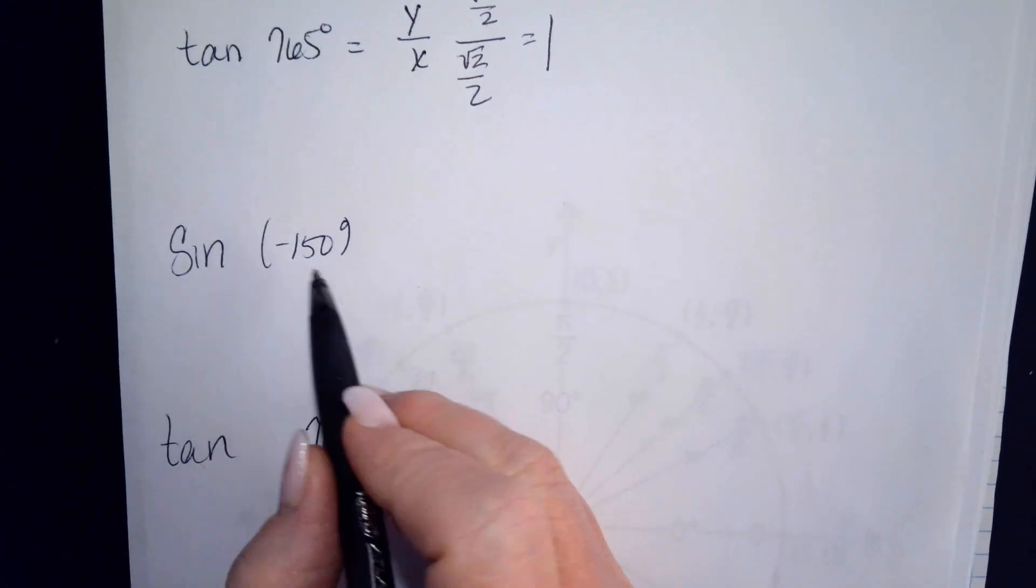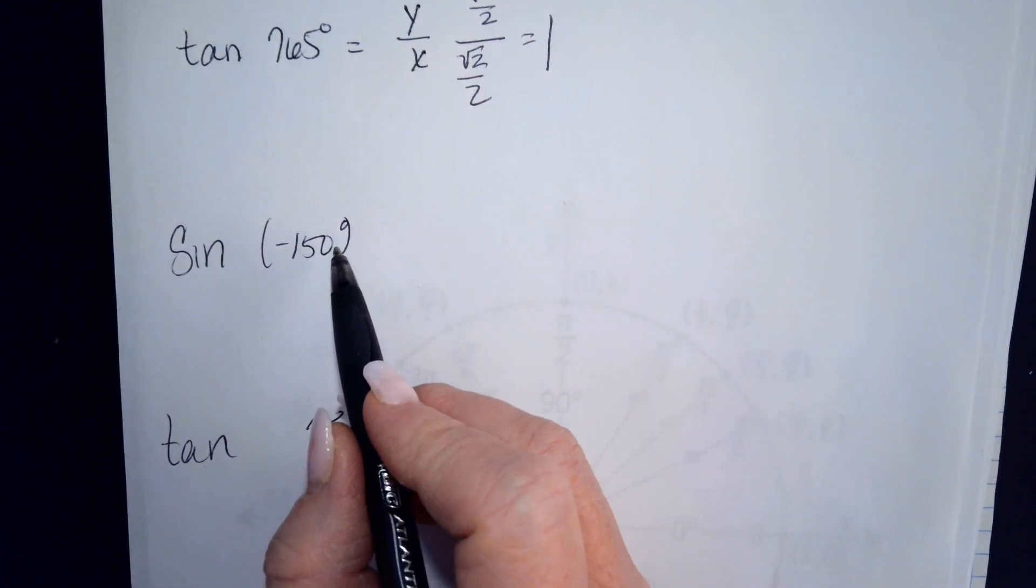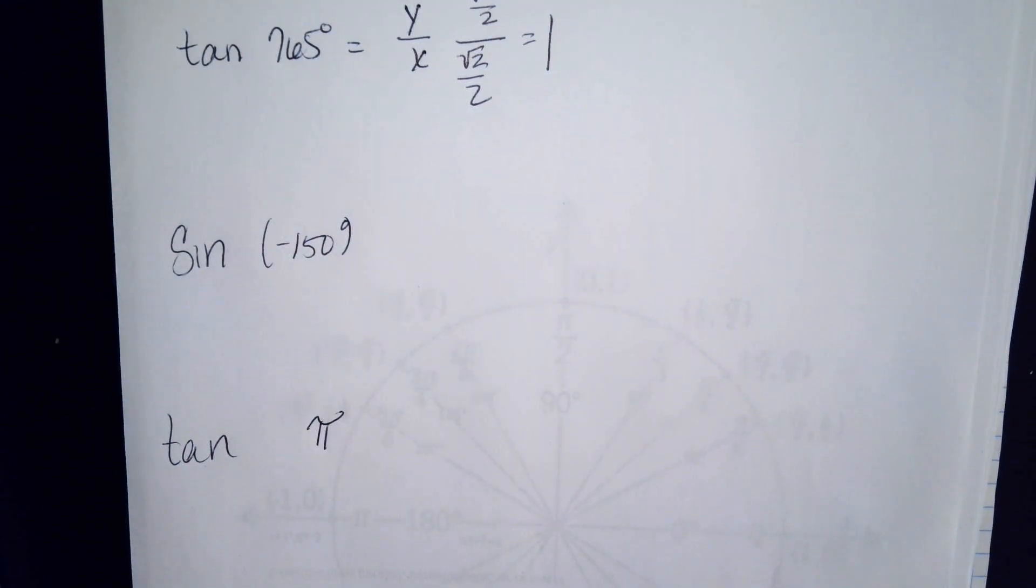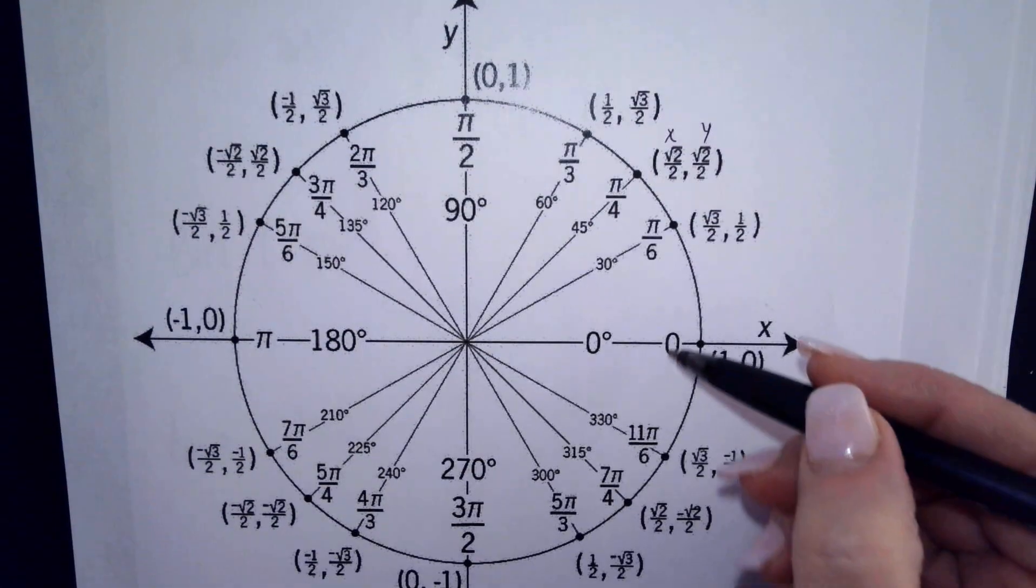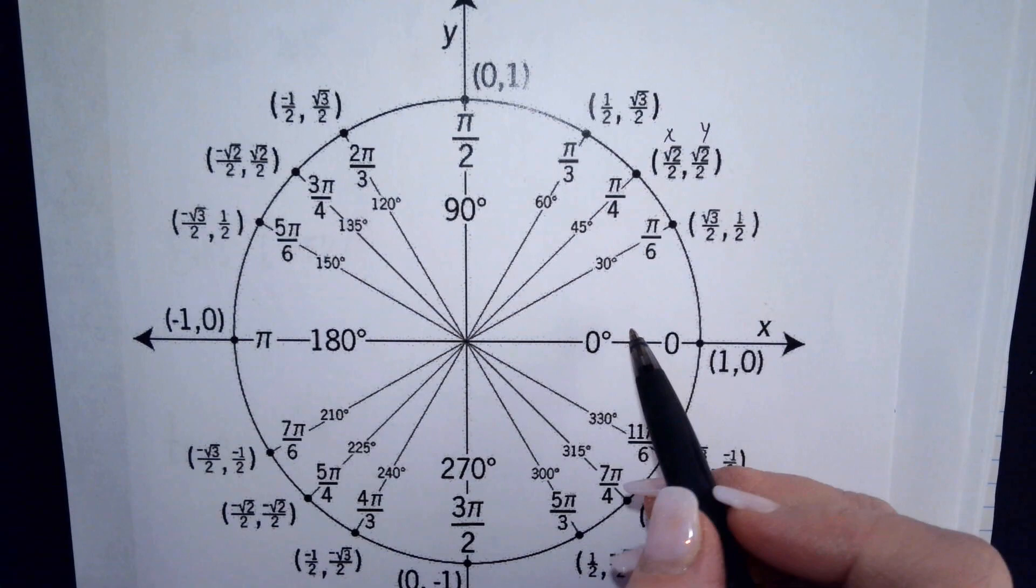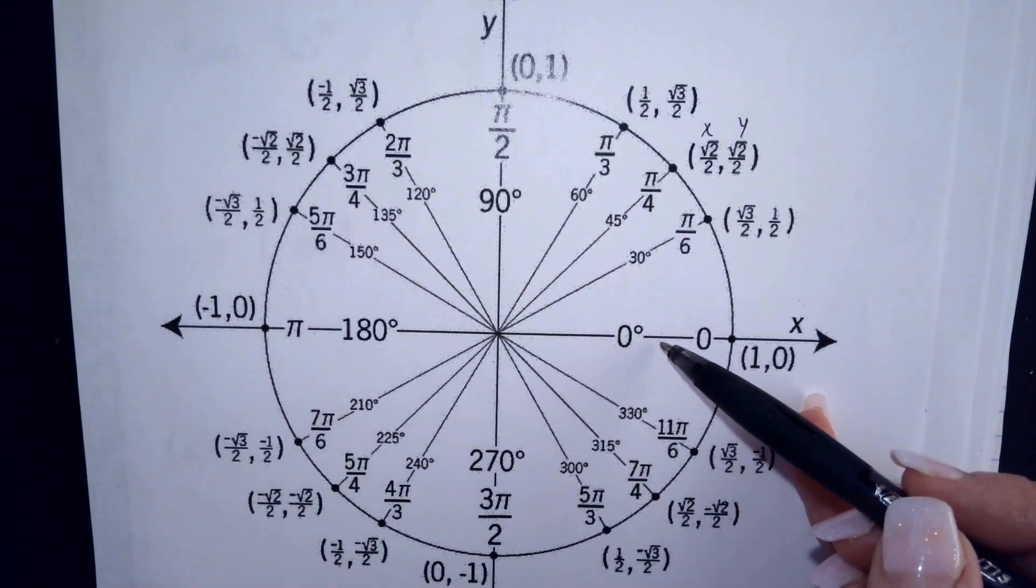I also wanted to go over how do you find the sine or the cosine or tangent of a negative angle. Well, a negative angle means that you are leaving 0 and you're going backwards. You're going this direction around the circle. And it said to go negative 150 degrees.